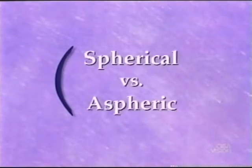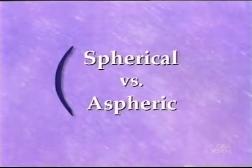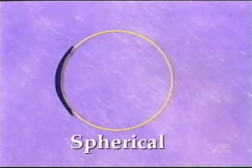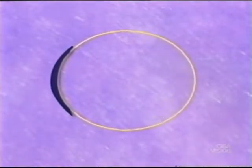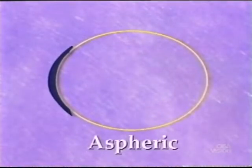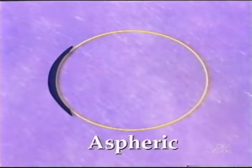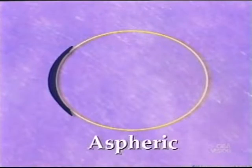The base curve may be spherical or aspheric in shape. A spherical curve has one radius and equal curvature at all points along the curve, much like the inside of a round ball. An aspheric curve exhibits a gradual change in the radius of curvature from the center toward the edge of the lens, much like the shape of the tip of an egg.